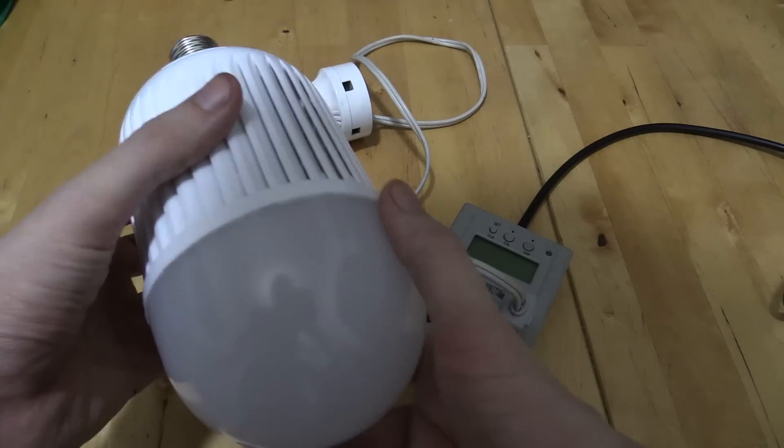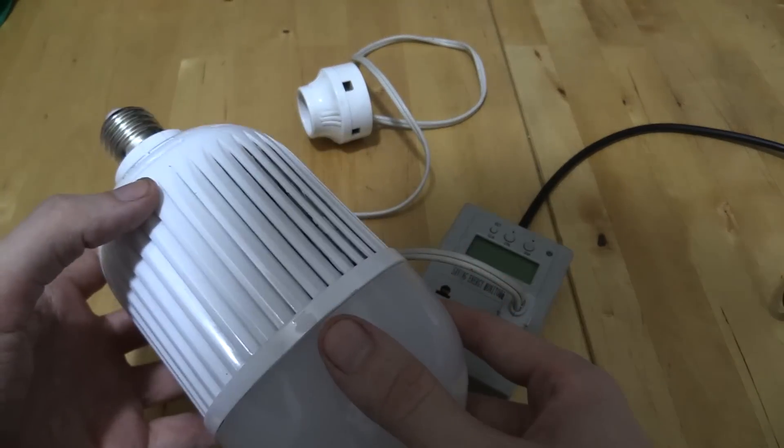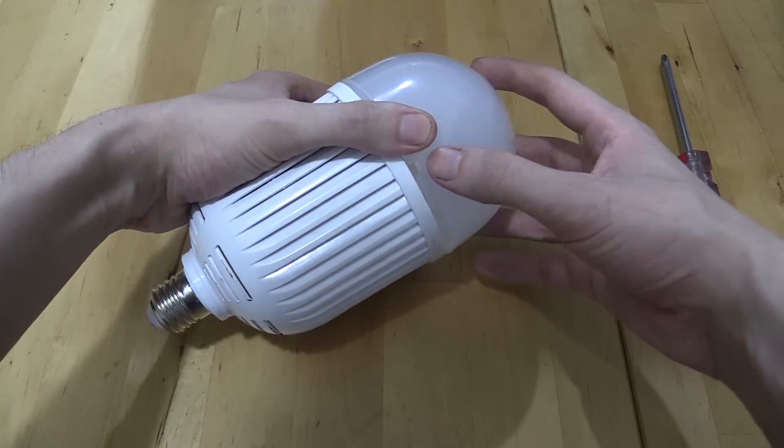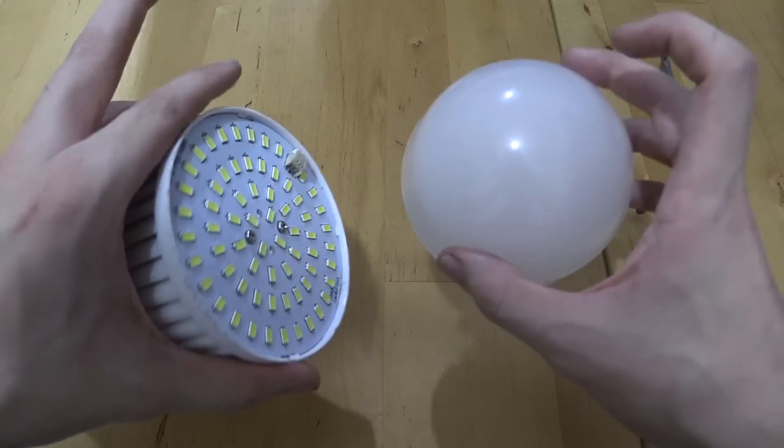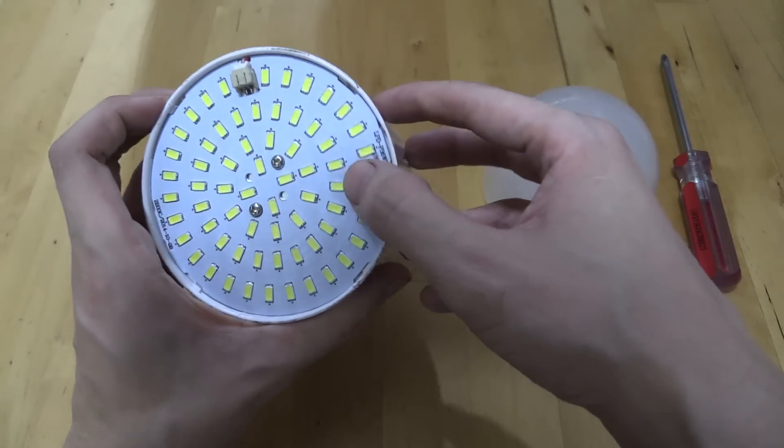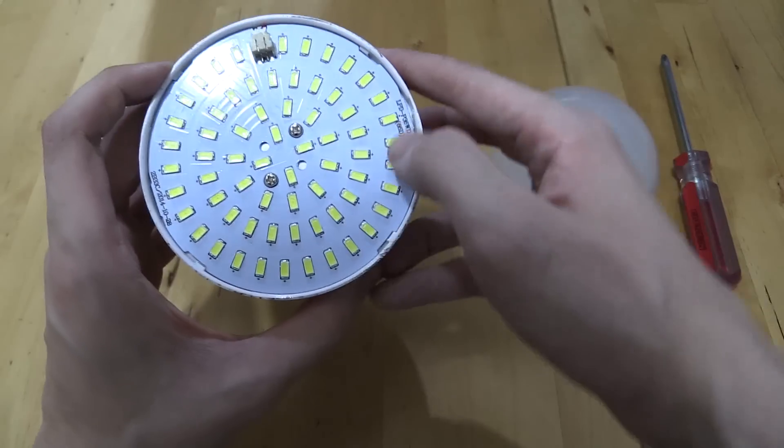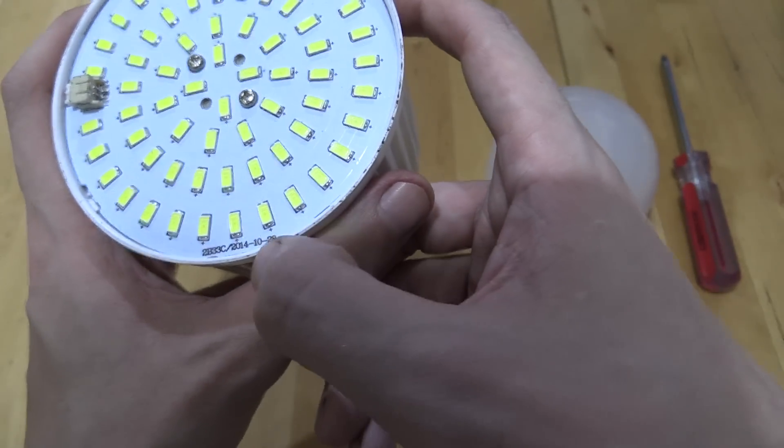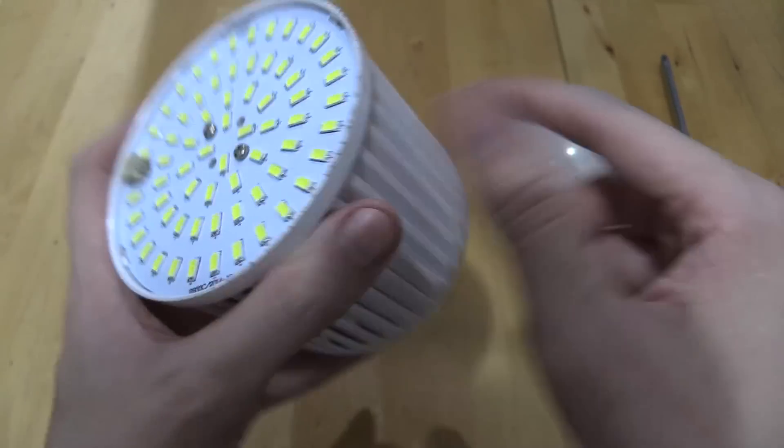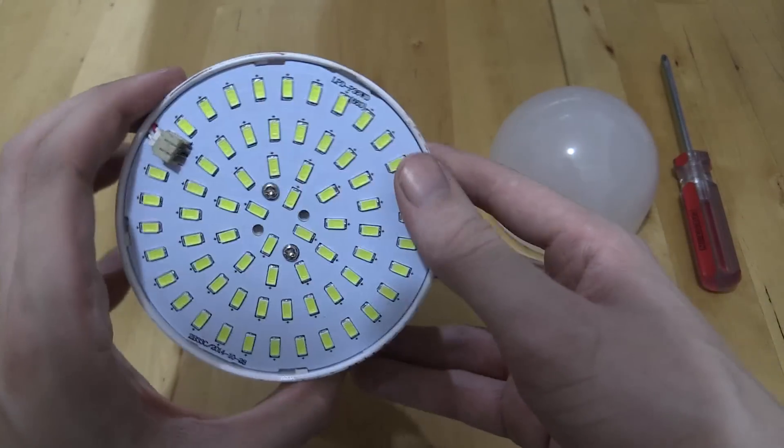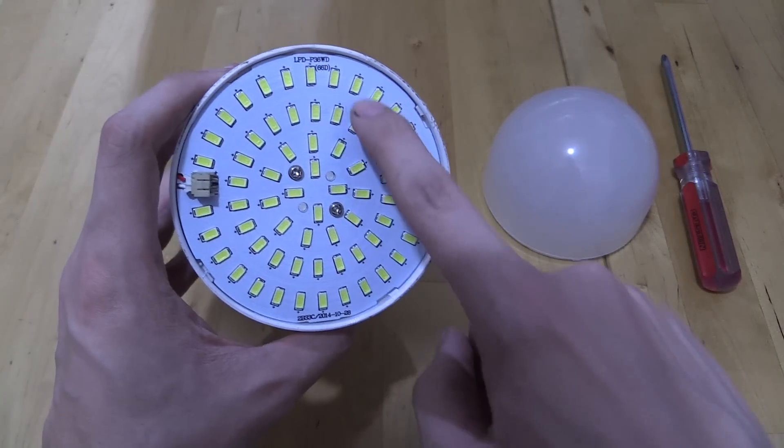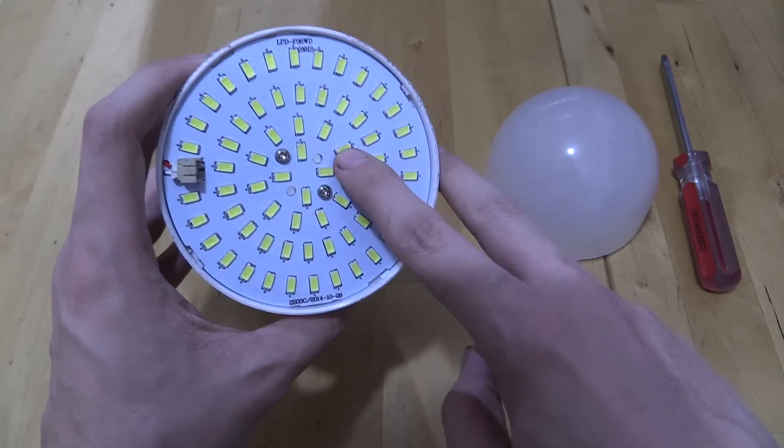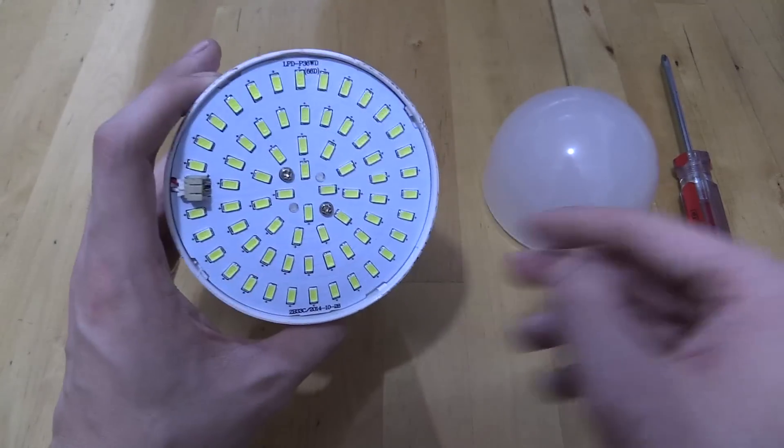So let's open this bulb up and see what's actually inside. Now it took a bit of effort but I eventually managed to remove this top cover and here you can see the SMD LEDs. So you can see on this one it says 28th of October 2014 so I guess this has been sitting around for a while. And there's a total of 66 LEDs here. So let's undo these screws and take a look inside.